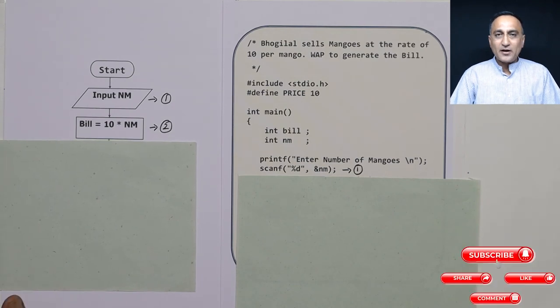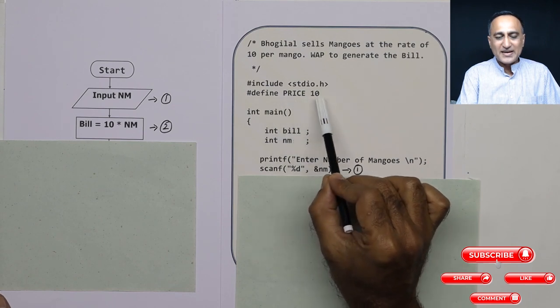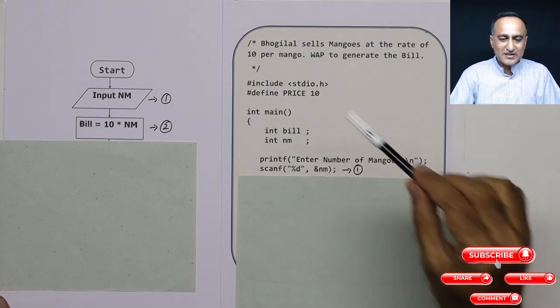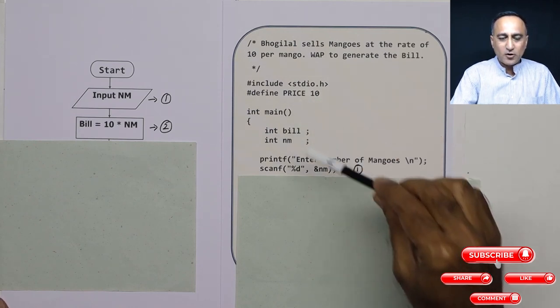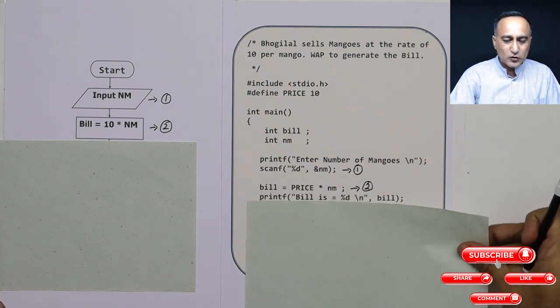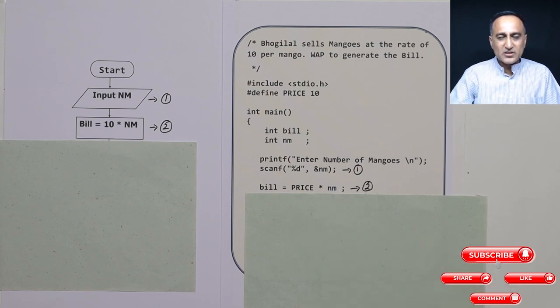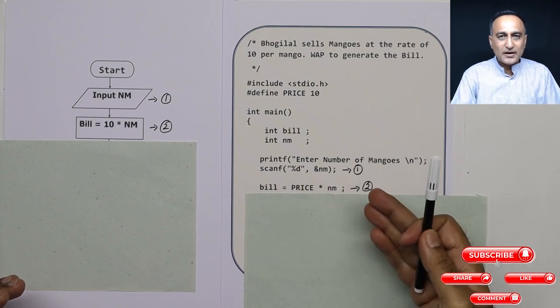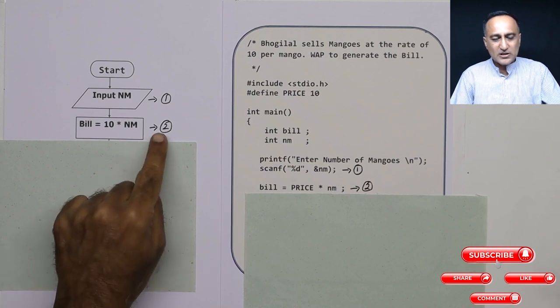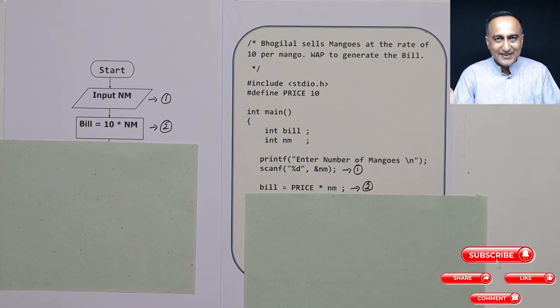Then I am calculating bill as 10 into number of mangoes. Since the price of a mango is fixed, I am defining a symbolic constant called as price as 10. So what the preprocessor will do is it will search for all occurrences of this particular string price and it will replace it with 10. So here in the next step, I am showing bill is price into number of mangoes. If I buy 50 mangoes, it's going to show price as 50 into 10, which is going to be 500. So step number two matches with step number two here. You can look at how closely there is an interlinking between the flowchart logic and the programming logic.